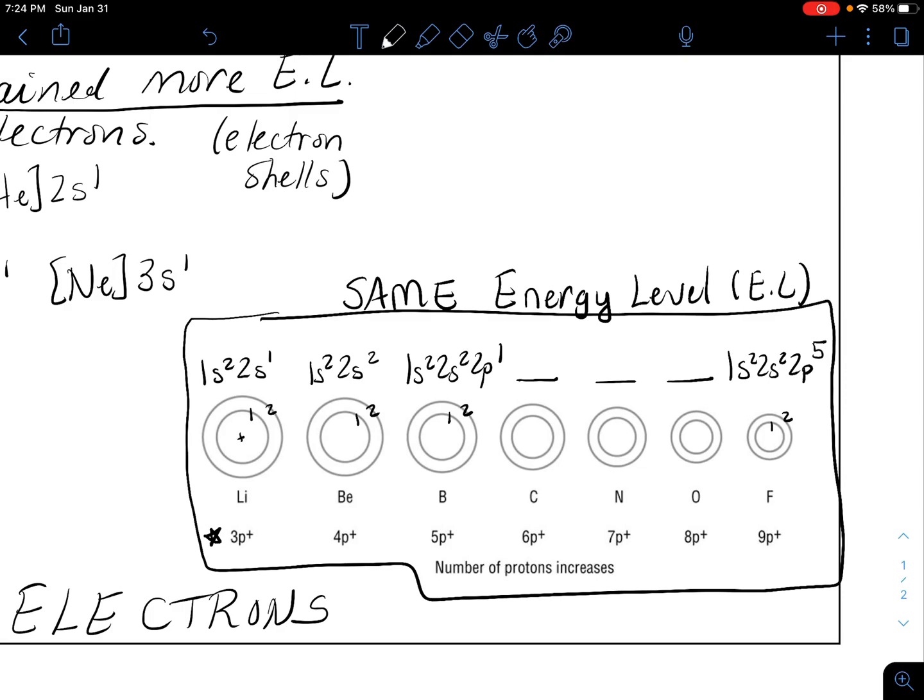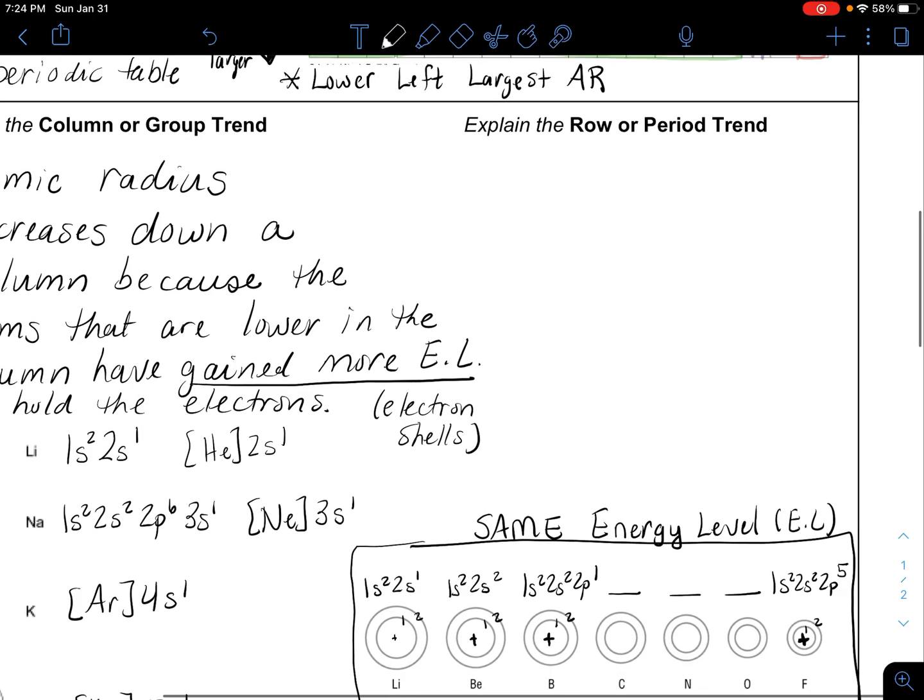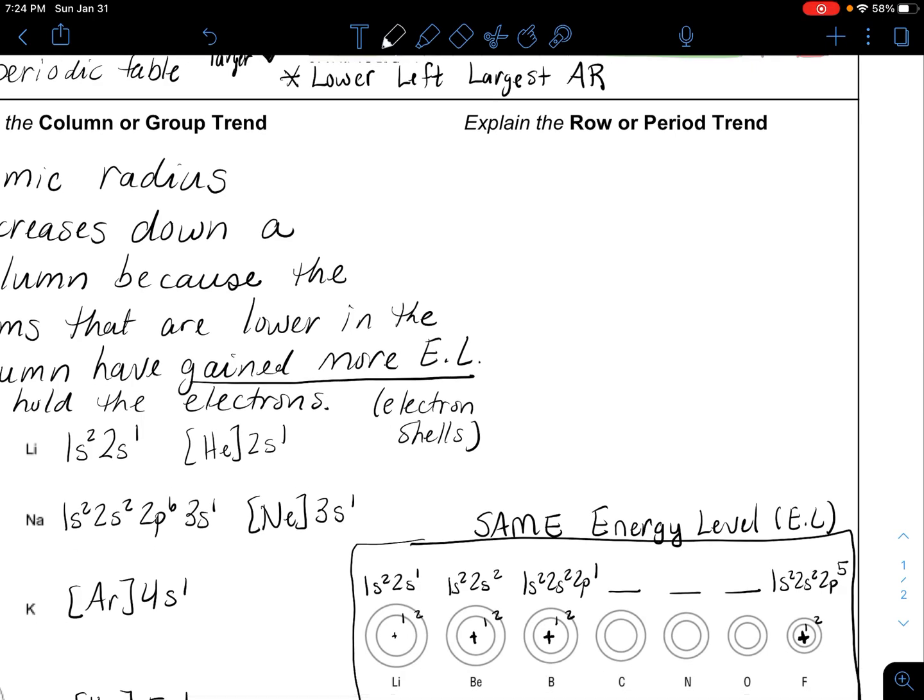You have to think about it like the protons in this nucleus keep getting larger and larger. Some people actually take the plus and write it really small and then write it bigger and bigger, and over here it's like really big proton count. What happens is there's more protons in the nucleus to pull in the electrons that are all in the same energy level.